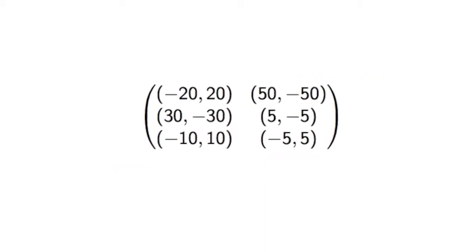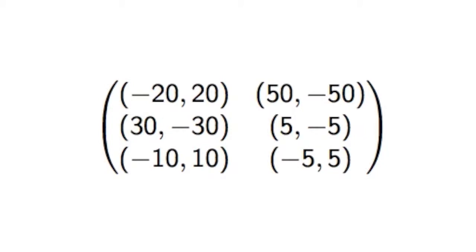If we take a look at a bi-matrix, let's take a look at the last row. So the last row is actually dominated by the second row. So for the row player, player 1, the person who chooses which row we're in, this last strategy is always worse than this one.